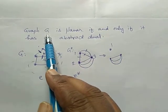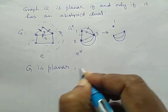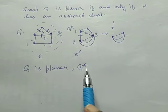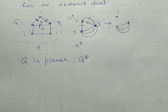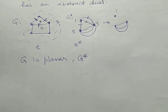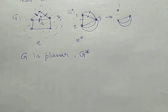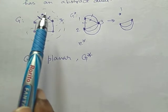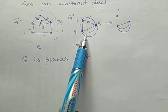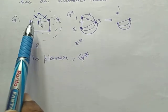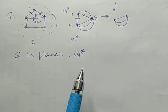First, if the graph G is planar and it has a dual G star, we are going to prove G star is an abstract dual. Our given data: G is planar and it has a dual G star; we have to prove it has an abstract dual. To prove G star is an abstract dual, it is enough to show that a set of edges forming a cycle in G corresponds to edges forming a cut set in G star.